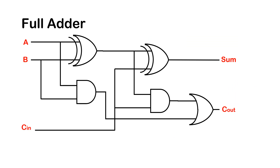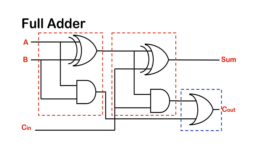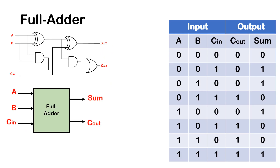The full adder basically consists of two half adders and also has an OR gate. The full adder has three inputs: input A, B, and a carry-in or C-in. The outputs are a sum and a carry-out, C-out. Here I've repeated the schematic of the full adder and also included the block diagram.